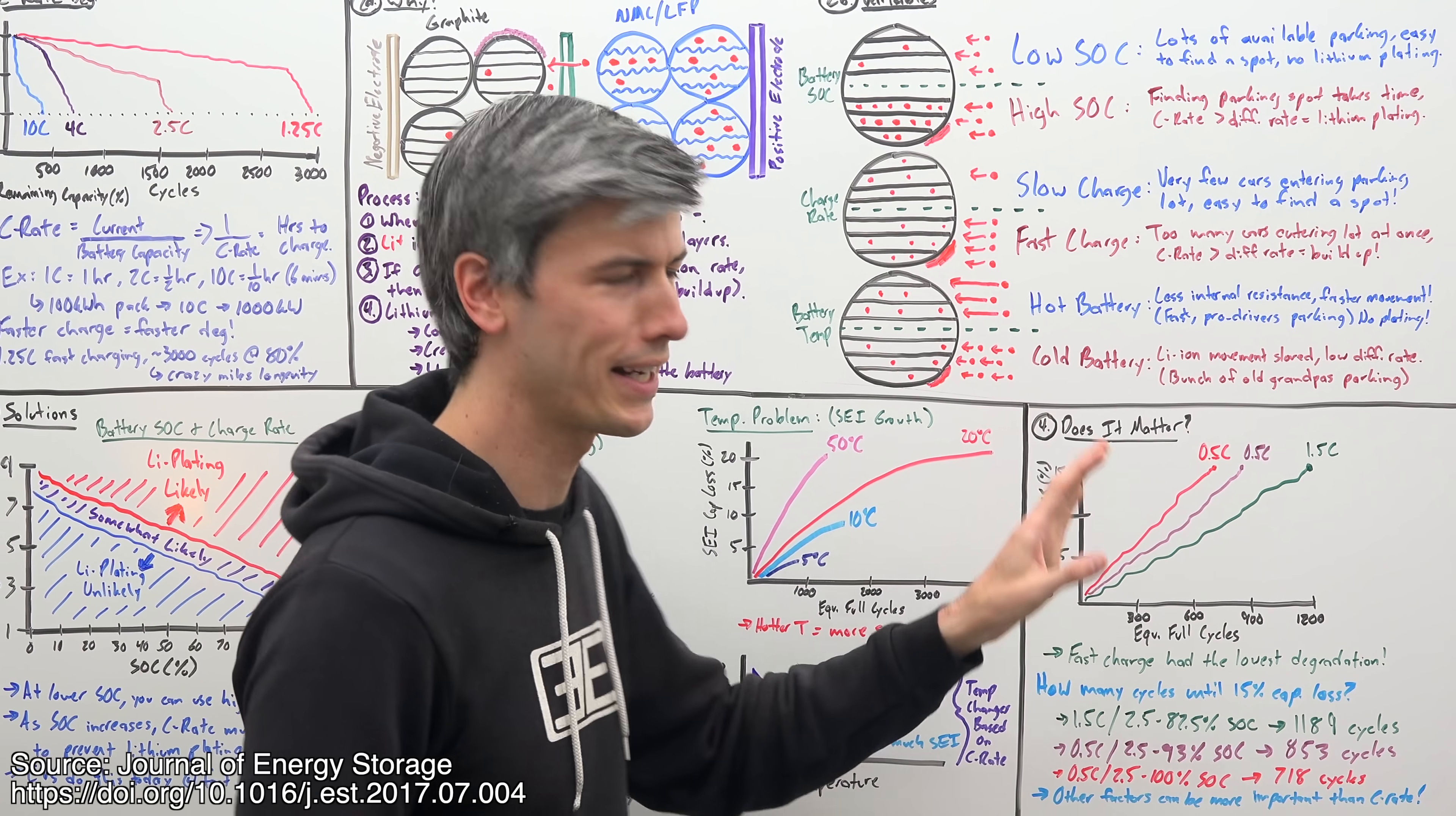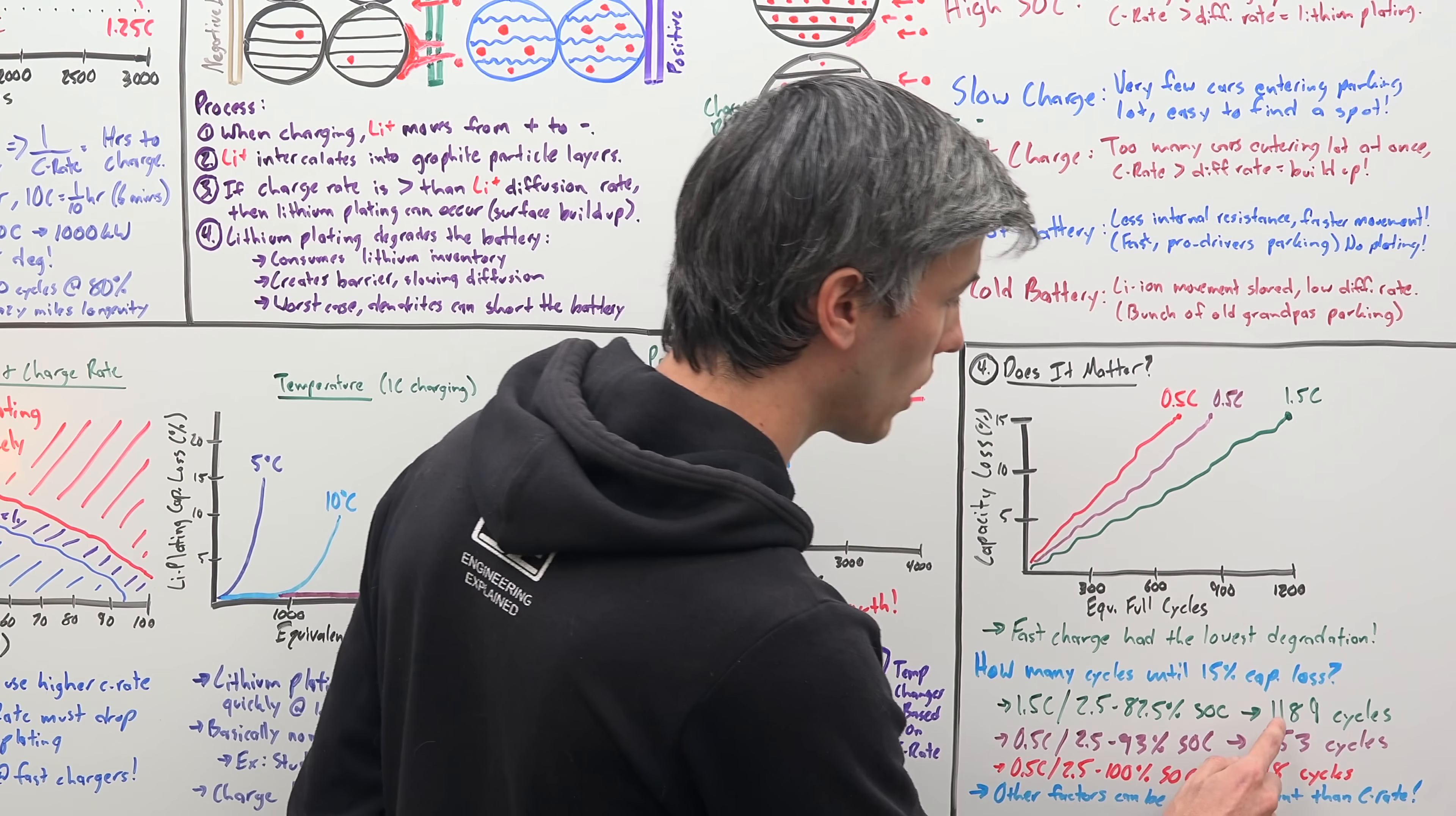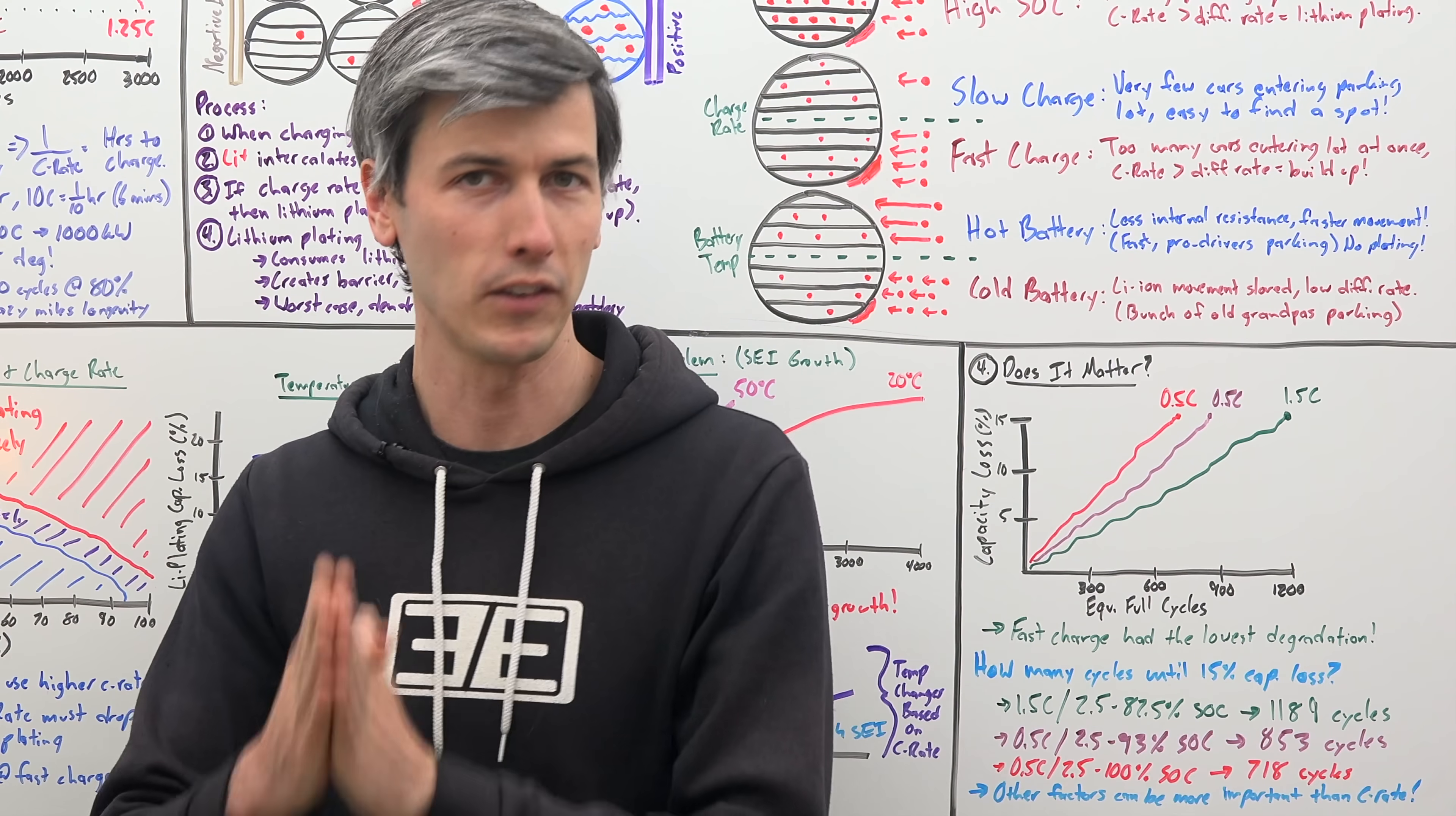All right. So here's a study that suggests charging rate is not the most important factor. So here on the bottom, we're looking at charging cycles and on the left, we're looking at capacity loss. And they tried three different charging methodologies. And here, the fastest charging methodology actually had the best longevity. So the tests were as follows. You were charging at 1.5C. That was the fast charging from 2.5% to 82.5% state of charge. That was good for 1189 cycles before reaching 15% capacity loss versus charging at 0.5C. So two examples doing slow charging, one going from 2.5% to 93% and one going from 2.5% to 100%. And both of those had significantly fewer cycles before reaching 15% capacity loss. So again, other factors can be more important than simply fast charging.